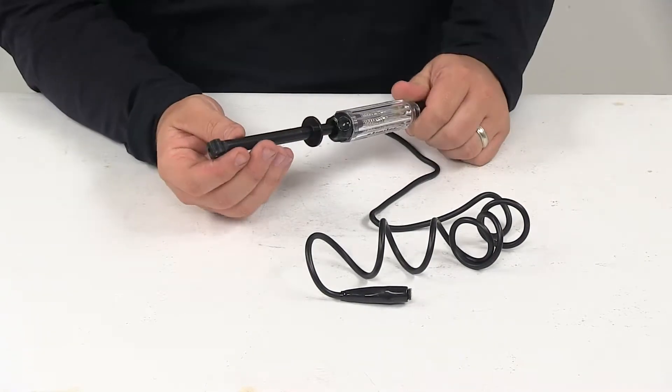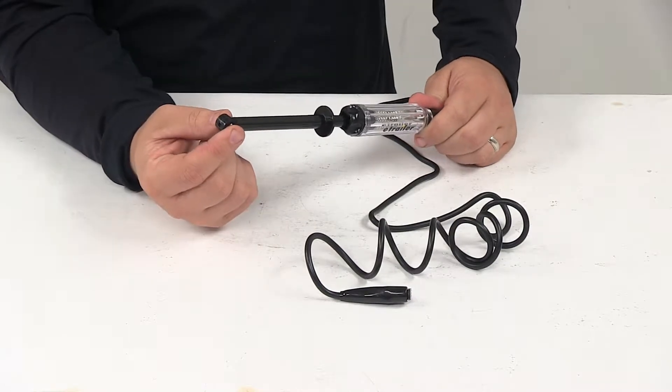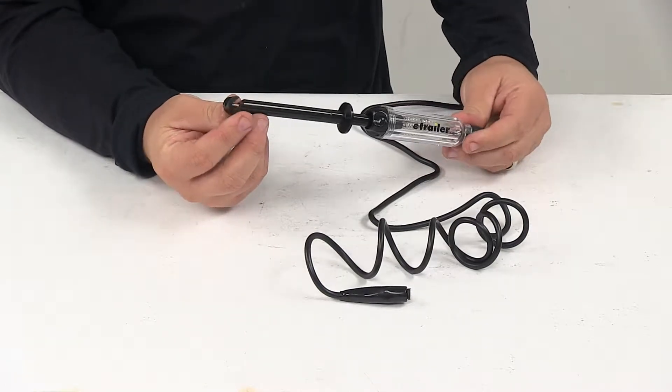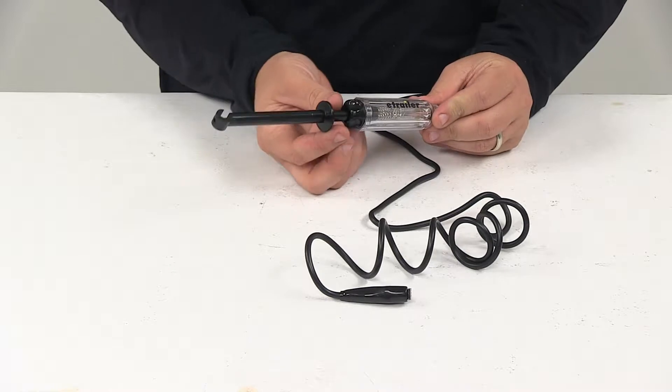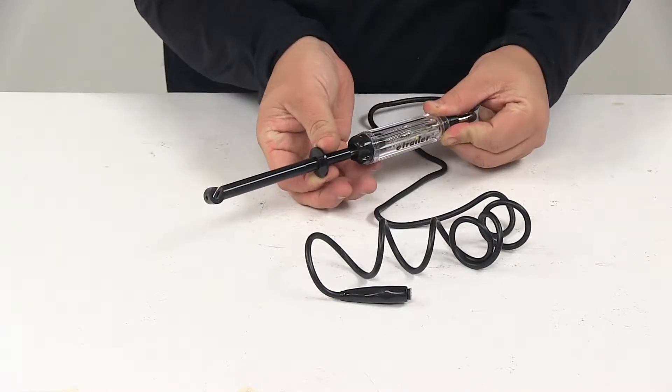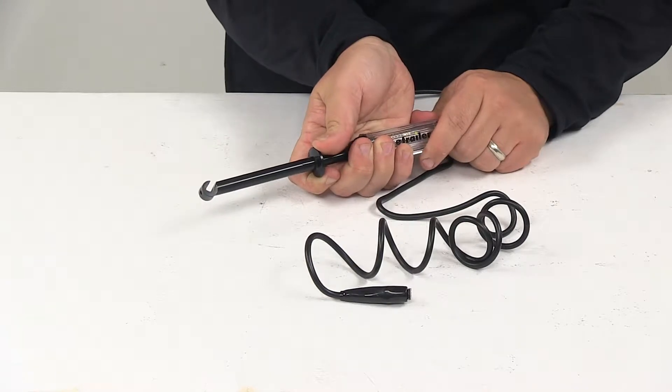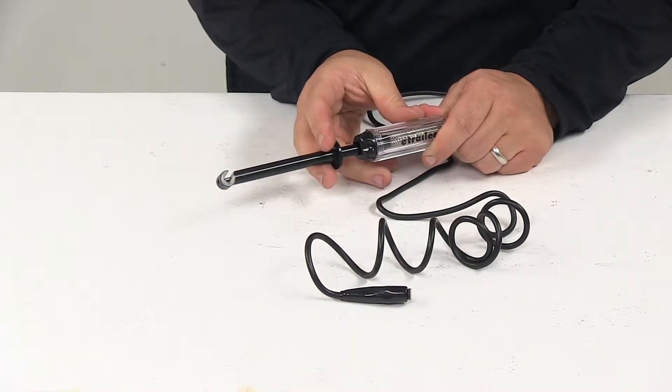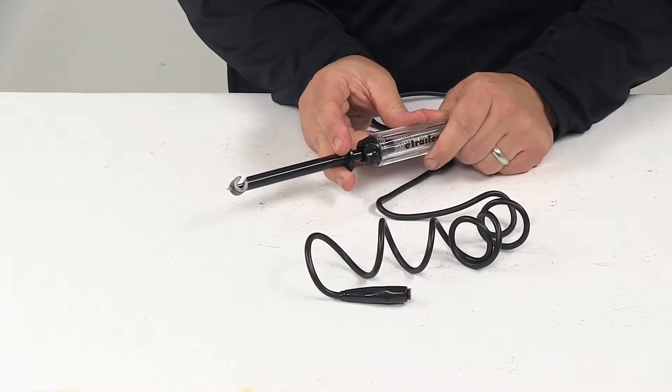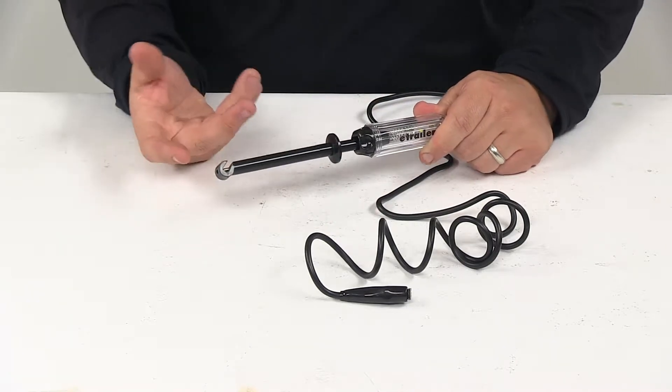It features a wire-piercing molded hook that locks onto the wires to free your hands while working. So all you have to do is push this up. It's spring loaded. Place the wiring inside here, the wiring that you're wanting to test. Let go. Put your fingers on top. Push down to pierce it, and that's all there is to it.